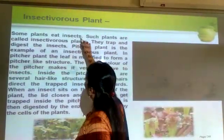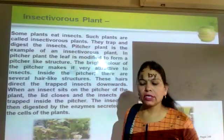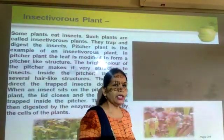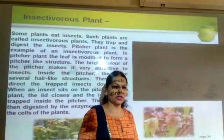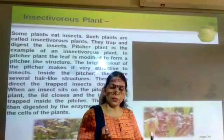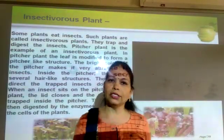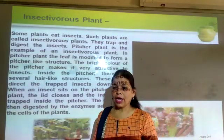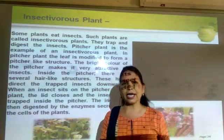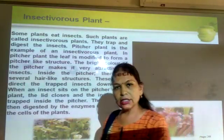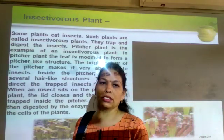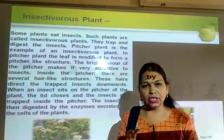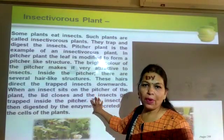Today's topic is insectivorous plants. Plants that eat insects are called insectivorous plants, because some types of plants do not contain green color pigment — chlorophyll — and that is why they get their nutrition from digested insects. Insects fly around this type of plant.